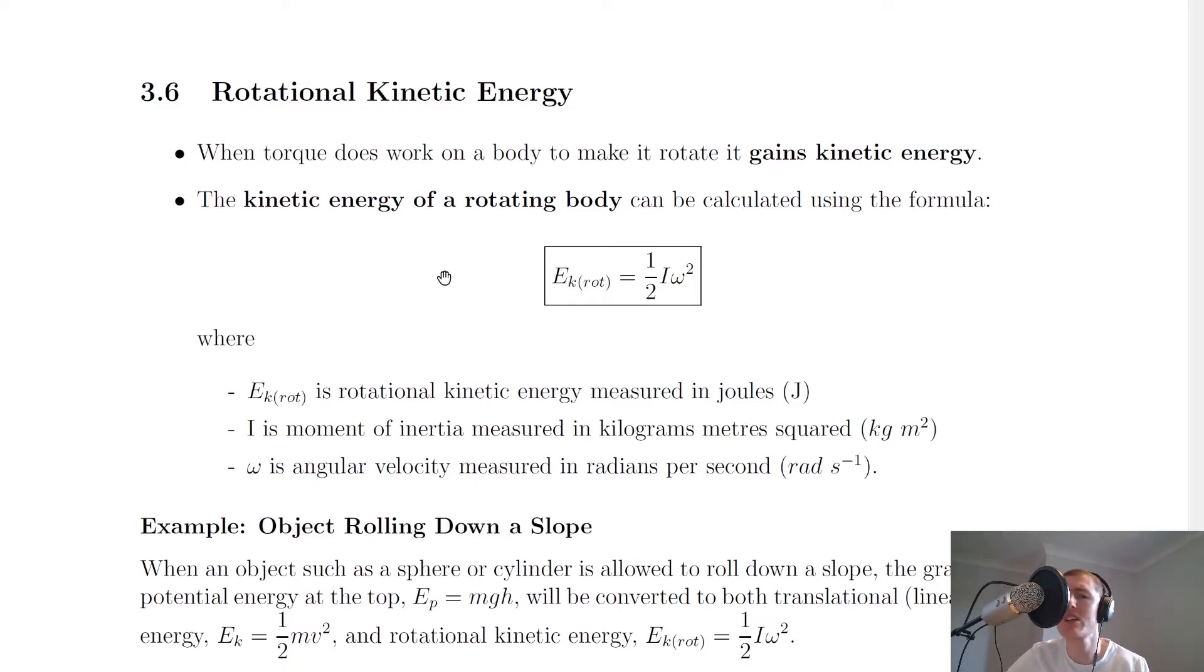We're still considering objects moving in a circle or rotating. When torque does work on a body to make it rotate, it gains kinetic energy. So when you apply an unbalanced torque to an object, it will make it gain kinetic energy because it starts moving.